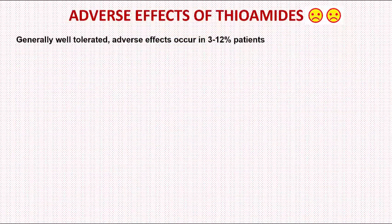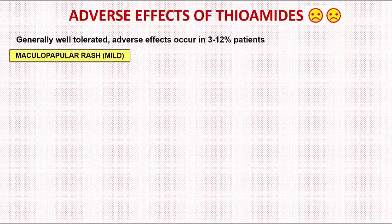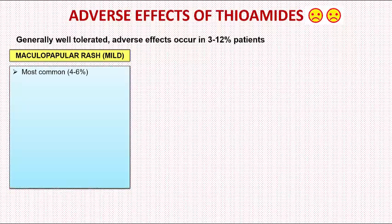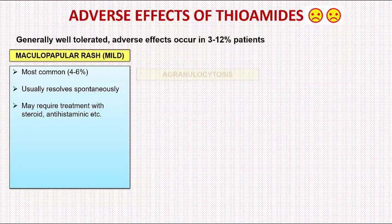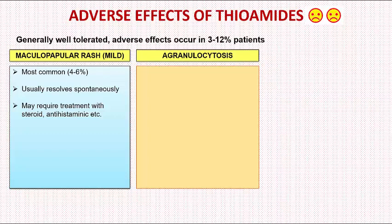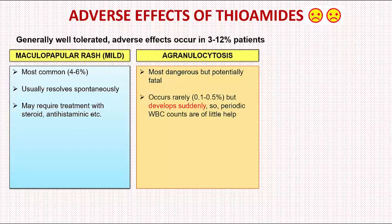Now let us look at the adverse effects. Both these drugs are generally well tolerated, with adverse effects occurring in around 3–12% of patients. The most common adverse effect is mild maculopapular rash, which usually resolves spontaneously or may be treated with steroids and antihistaminics. The second important adverse effect is agranulocytosis — a dangerous and potentially fatal effect occurring rarely in around 0.1–0.5% of patients. It develops so suddenly that periodic WBC counts are of little help because they might miss the sudden onset.